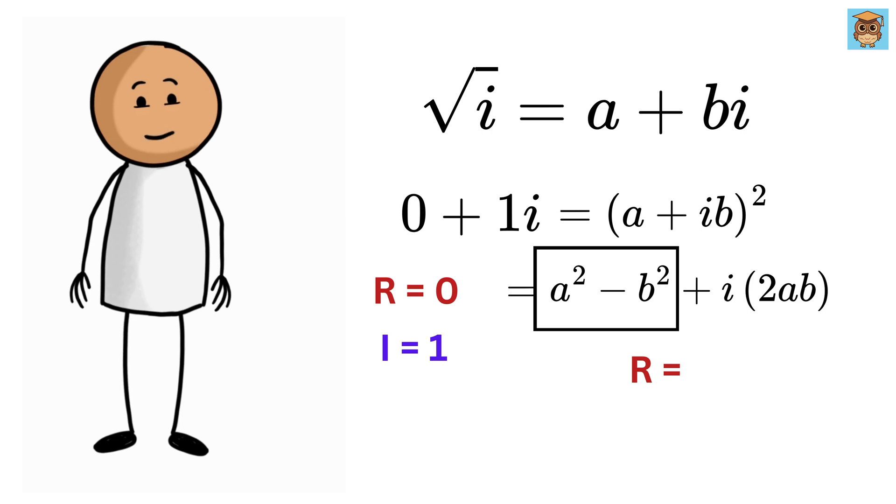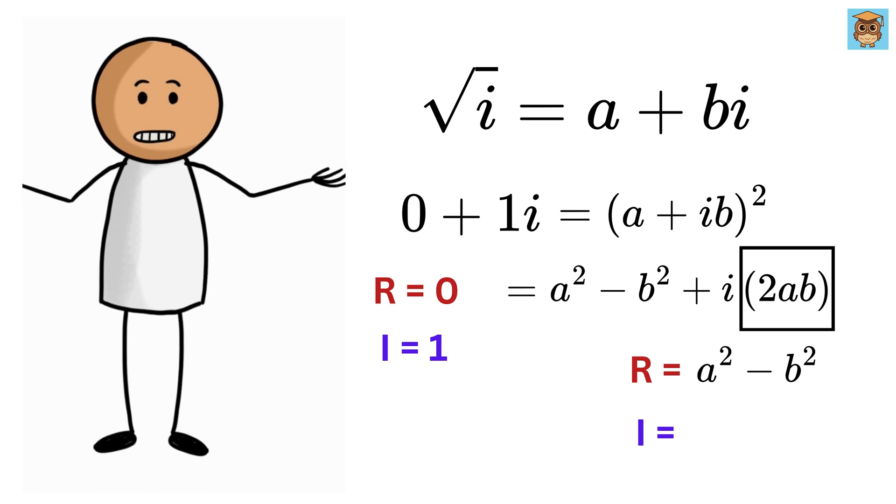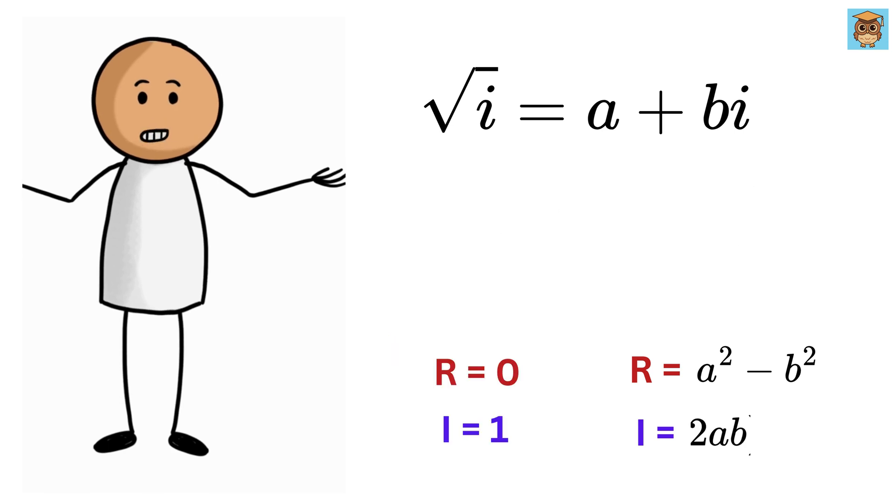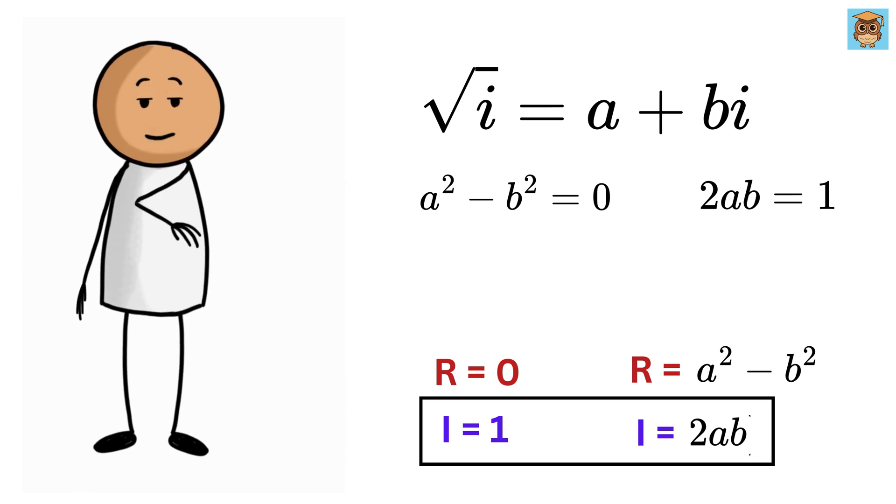Therefore, here, we have the real part as a² - b² and the imaginary part as 2ab. So we can separately compare the real and the imaginary parts of both of them to get a² - b² = 0 and 2ab = 1.